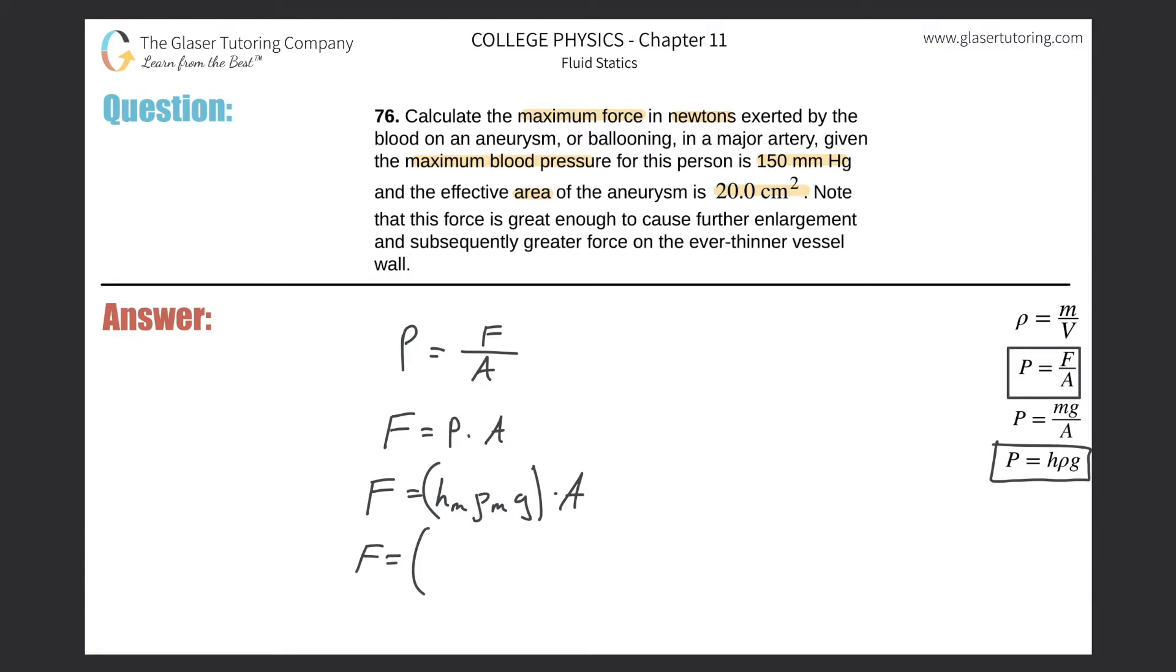So here now force will be equal to the height of the mercury - remember we need standard units, if this is in millimeters better convert it into meters, so this is going to be 0.150 meters divide by a thousand, times the density of mercury - you need it in kilogram per cubic meter, we've been doing enough problems you probably memorized at this point, 13,600, then multiplied by our gravity of 9.8.